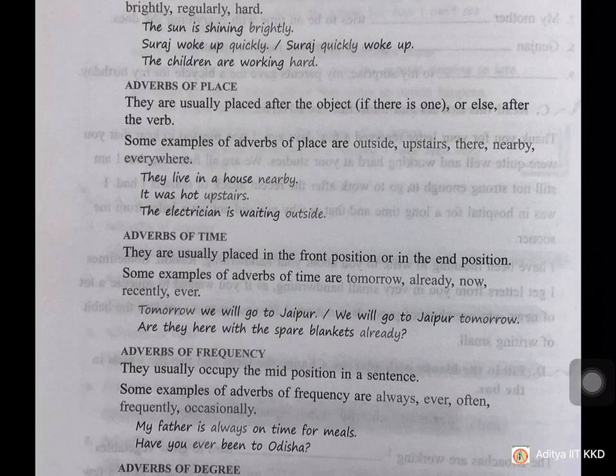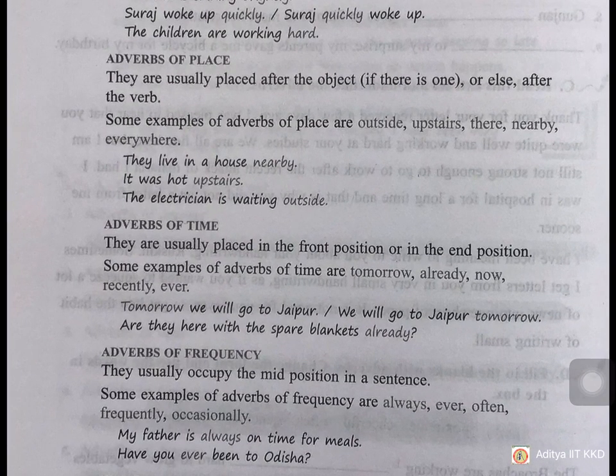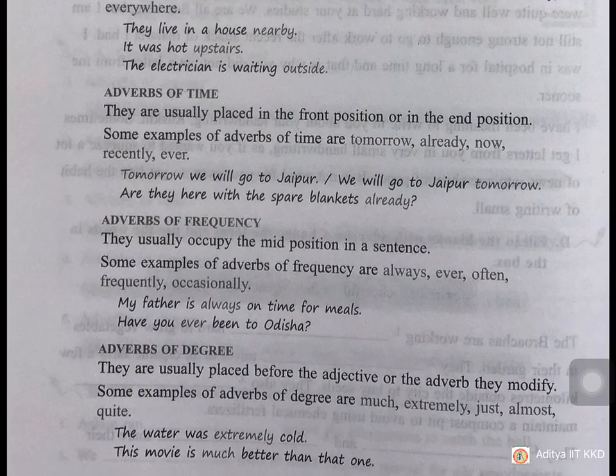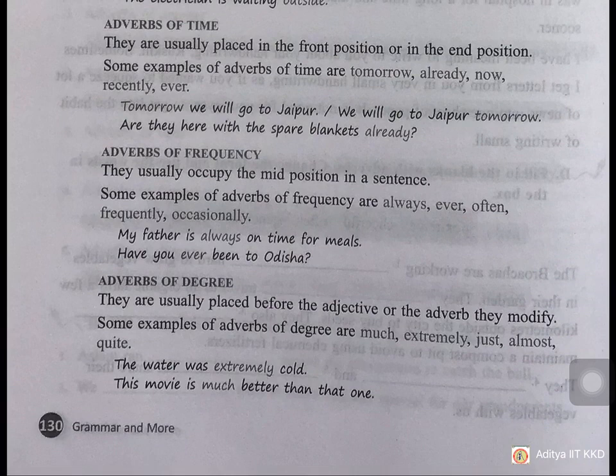Adverbs of time are usually placed in the front or end position. Examples: tomorrow, already, now, recently, ever. 'Tomorrow we will go to Jaipur' or 'We will go to Jaipur tomorrow' — both correct. Adverbs of frequency usually occupy the mid position in a sentence. Example: 'My father is always on time.' Go through the position of adverbs — the description will help you answer exercise A easily.